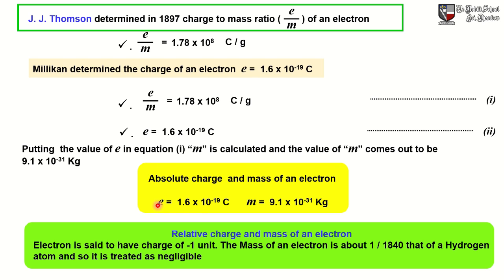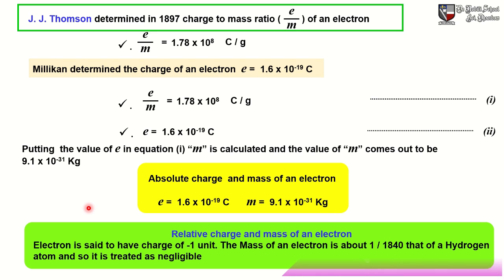The absolute charge of an electron E is equal to 1.6 × 10⁻¹⁹ coulomb, and the absolute mass of an electron M is equal to 9.1 × 10⁻³¹ kg. In terms of relative charge and mass, an electron is said to have a charge of minus 1 unit. The mass of an electron is about 1/1840 that of a hydrogen atom and so it is treated as negligible. In our next class we will learn about anode rays and the proton. Thank you.